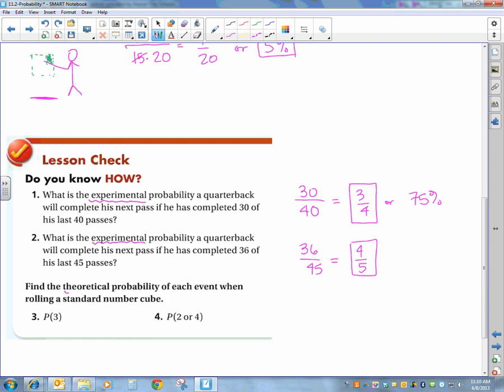Now we have a theoretical probability which means I don't have an experiment happening and I just have to figure out on a standard number cube I got 6 sides and how many of those sides have a 3 on them? 1. So it's 1 sixth. Again, I have 6 sides. How many of those sides have a 2 or a 4? Well, that would be 2 of the numbers and that reduces to 1 third.